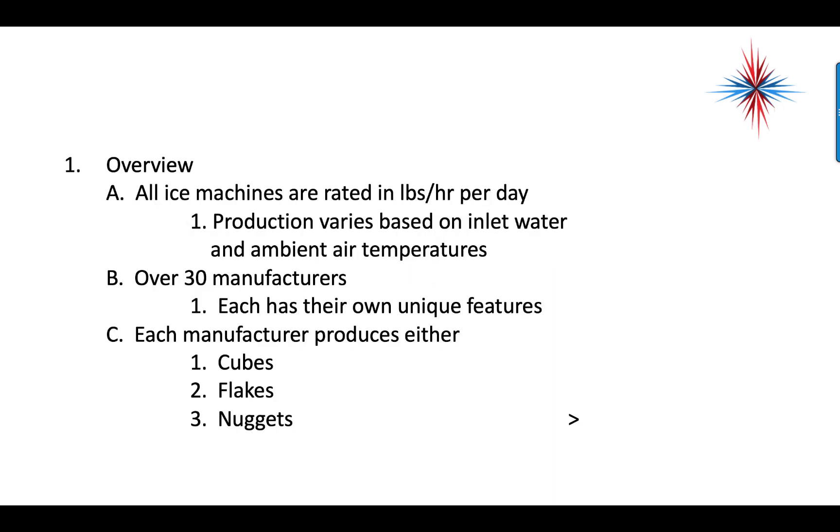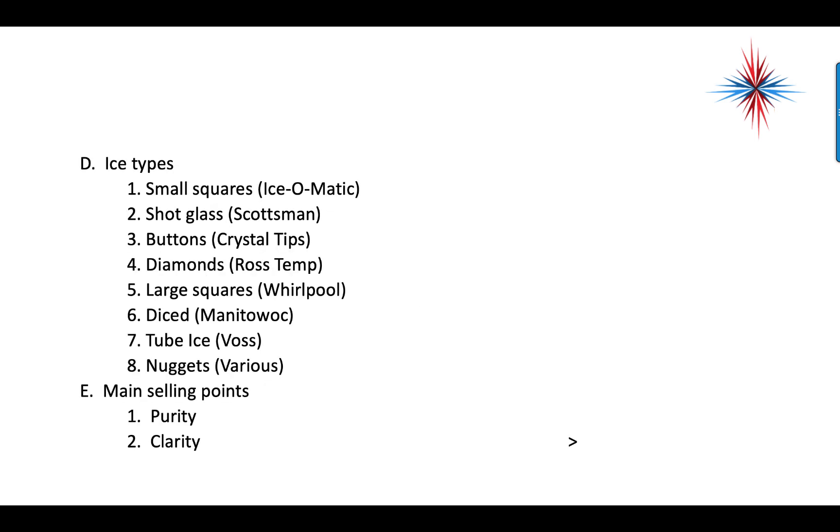All ice machines are rated in pounds per hour per day. We've already talked about that production varies based on inlet water temperature and ambient air temperatures. We have over 30 manufacturers of ice machines and each one has their unique features. Each manufacturer produces either cubes, flakes, or nuggets as terms of the ice type.